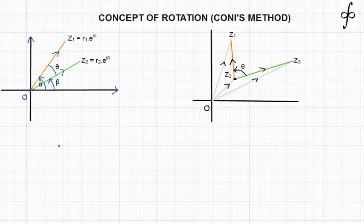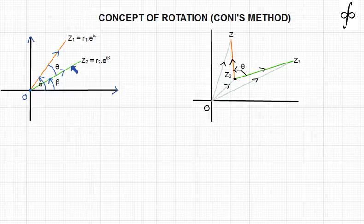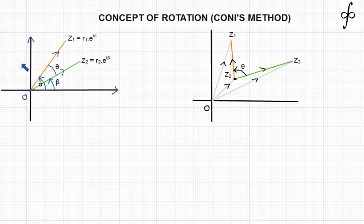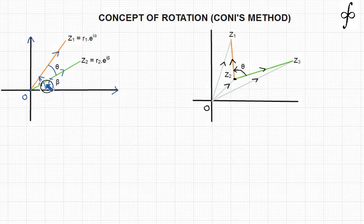Let's discuss the concept of rotation — the conic method related to complex numbers. As you can see in the figure on the left-hand side, I have taken a simple case: z1 is a complex number written in Euler form as r1·e^(iα), and z2 is another complex number written as r2·e^(iβ). A complex number is like a vector quantity with magnitude r1 and direction (argument) alpha; similarly z2 has magnitude r2 and argument beta.